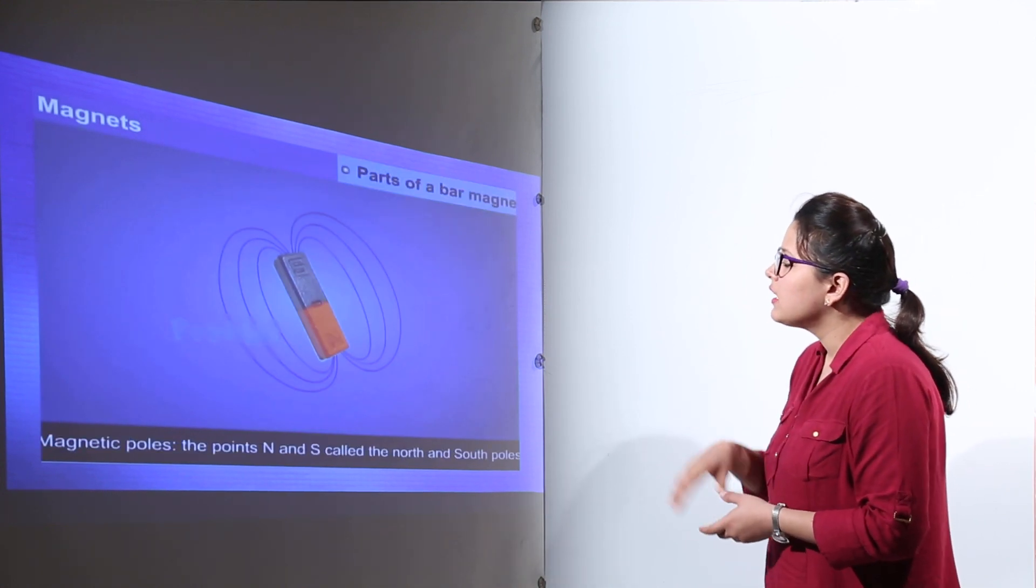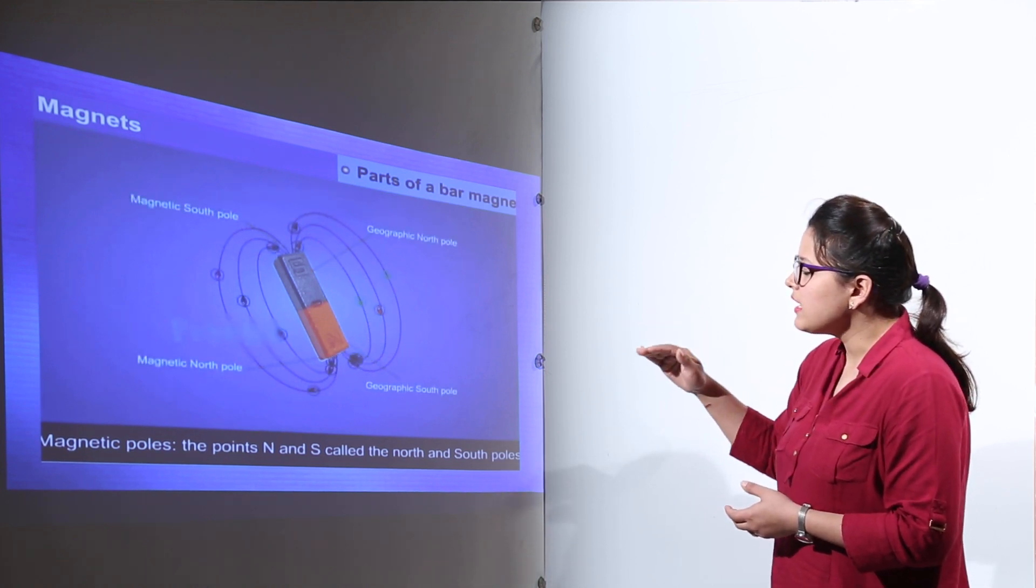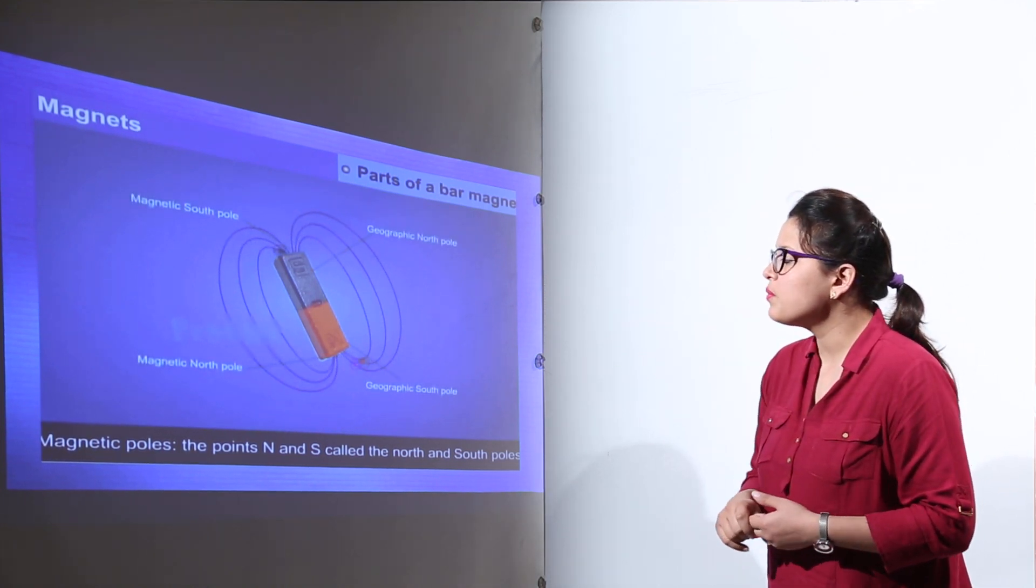Now we are discussing the parts of a magnet. A bar magnet has magnetic poles. The N and the S are called the north and south poles of the magnet.